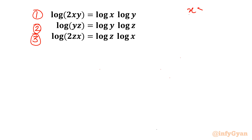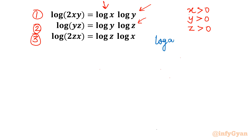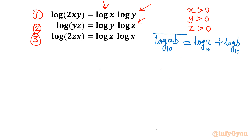For real solutions, x, y, and z should always be positive, since log x, log y, and log z appear in the equations. We will use the powerful logarithm property: log(ab) = log a + log b. Note that this log is not the natural log — the base is understood to be 10 everywhere.